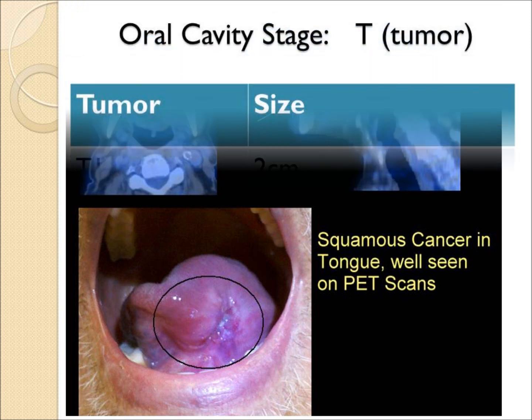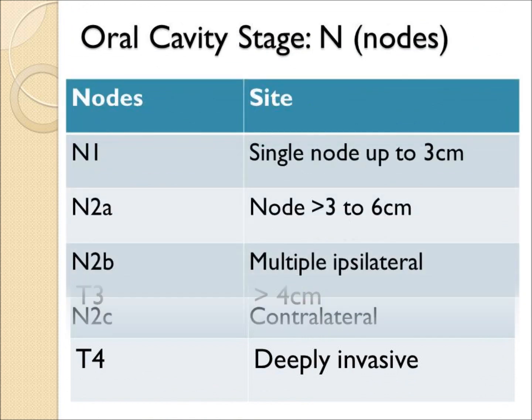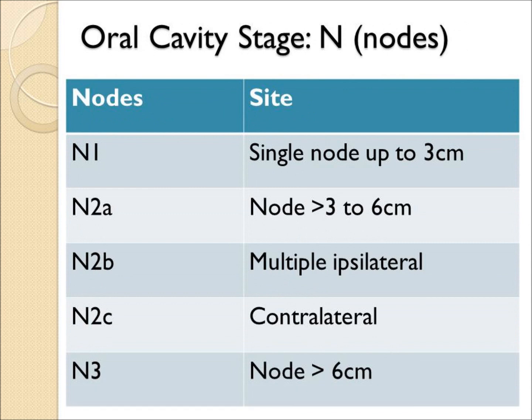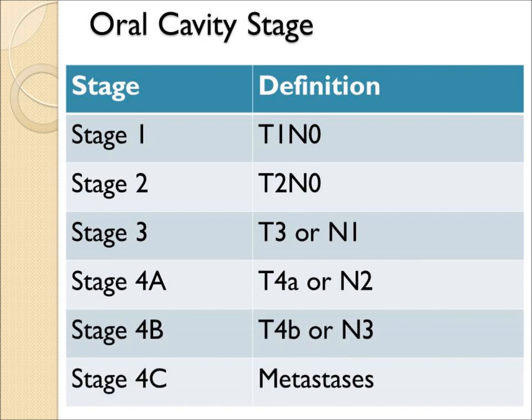The staging system for oral cavity cancer is shown here. It is based on the T, or tumor size, and the N, or lymph node size and number. These are combined to form the staging system.